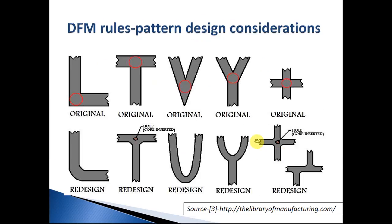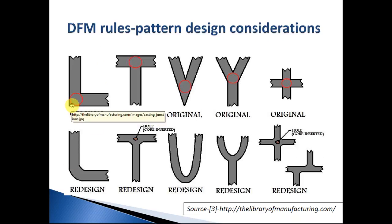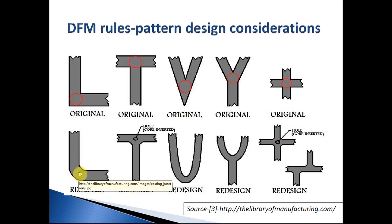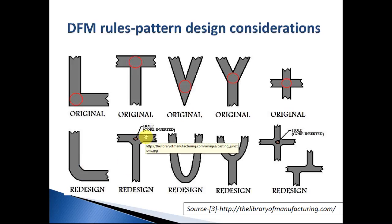This slide also shows design considerations for pattern making. The top left image shows a hotspot region where shrinkage can be severe. To avoid this, design changes can be made as shown, or cores can be inserted to form holes in those regions and prevent hotspots. Additionally, internal chills can be used so that solidification starts from those regions directly.